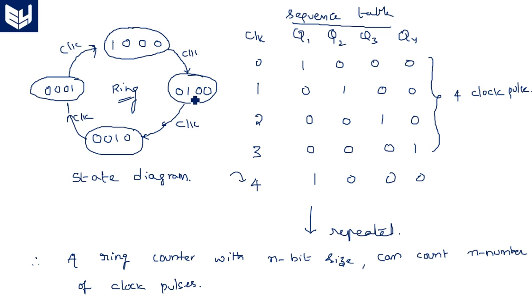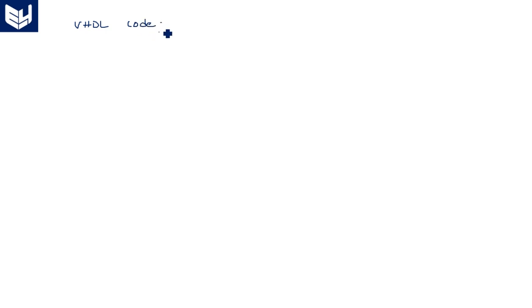A ring counter takes N number of clock pulses to repeat the sequence, so we can say it is used to count N number of clock pulses. This is very important: the ring counter counts N number of clock pulses.